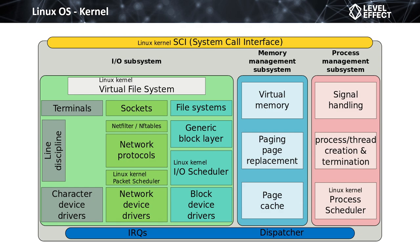Now let's take a look at a snapshot of the Linux OS kernel and compare it to Windows. In this diagram, we have an I/O subsystem composed mainly of the building blocks of the kernel itself, and then two things off to the right: the memory management subsystem and the process management subsystem. At the top of the diagram is the Linux kernel system call interface — this is how user-land applications and components talk to the kernel and vice versa. At the bottom we see the IRQs and the dispatcher, which is how the kernel talks to hardware components.